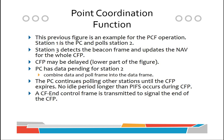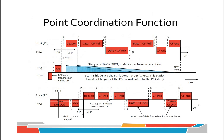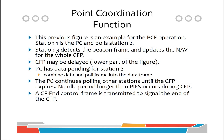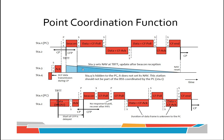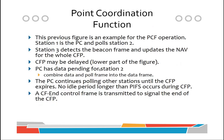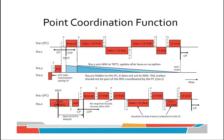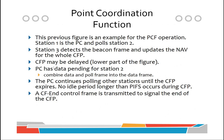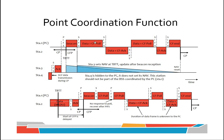Station 1 polls station 2 in the first scenario. In the second scenario it may poll a different station first due to no response, then poll station 2. Station 3 detects the beacon and updates its NAV for the whole contention free period. The CFP may be delayed as shown. When the point coordinator has data pending for station 2, it combines the data and poll frame into a single data frame.